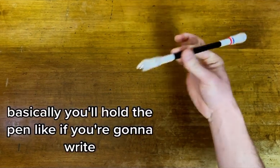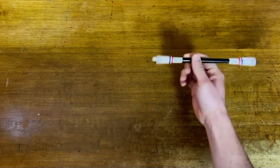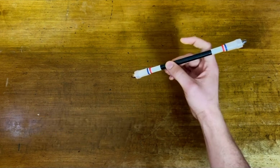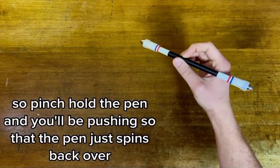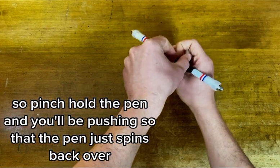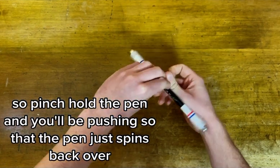Basically, you'll hold the pen like if you're going to write, and you'll pinch it back over your thumb. So pinch, hold the pen, and you'll be pushing so that the pen just spins back over.